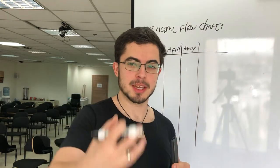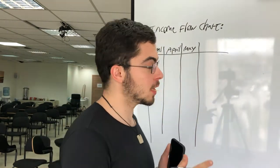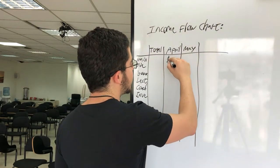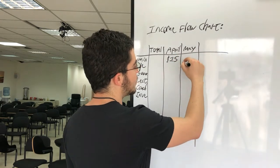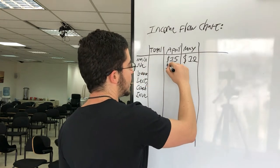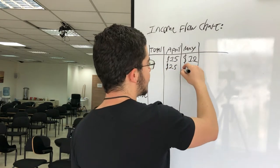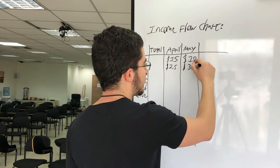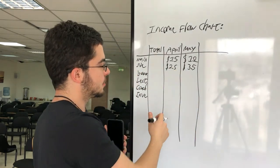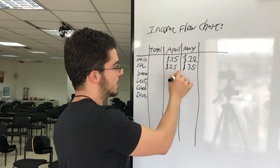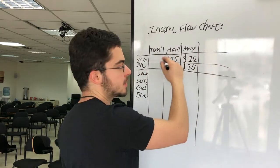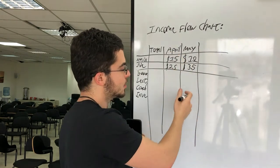Everything gets written down — every single thing that brings in money. The way I write it down is, let's say in April I got $15k from the main business, and in May I got $18k. The side business brought in an extra $2,500, and the next month it brought in an extra $3,500. I write down all the different incomes from each month per income source, and then I update this roughly once a week to make sure I'm on track.